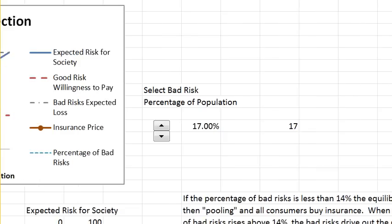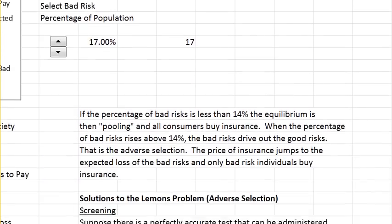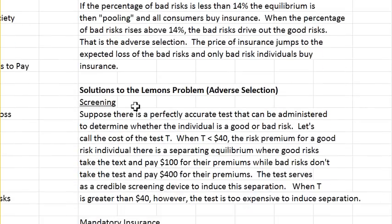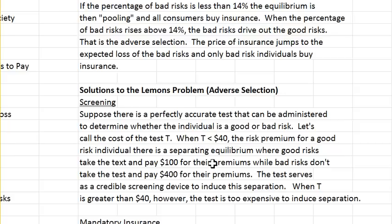On the right, scrolling down, there is a discussion of two possible solutions. One is screening. If you could identify the good risk through some credible test costing T, as long as T is less than $40, good risks would take the test, pay T, and get the low price of insurance. Bad risks wouldn't take the test at all and would pay the $400 high price. This works if you have a credible test — otherwise this equilibrium doesn't exist — but if you do, it will sort the risks.